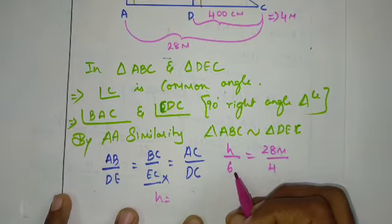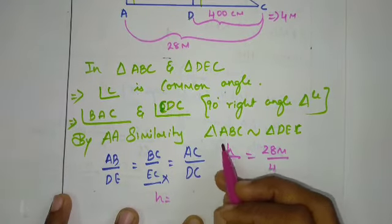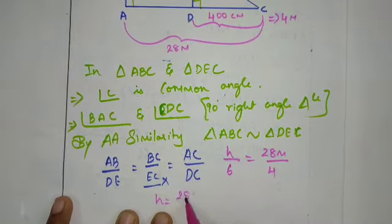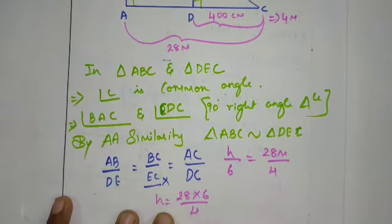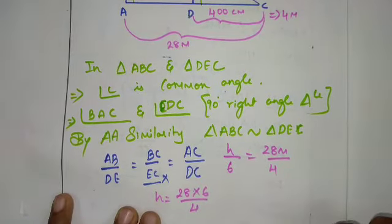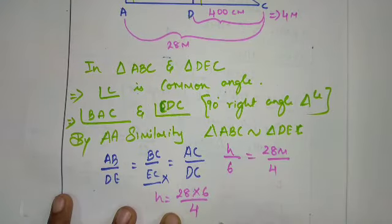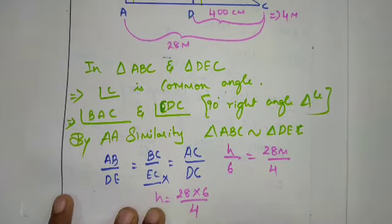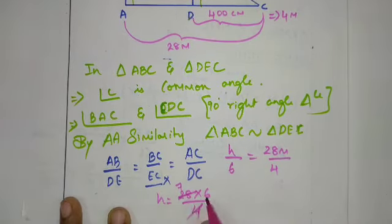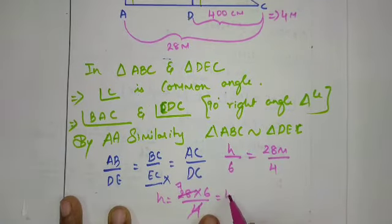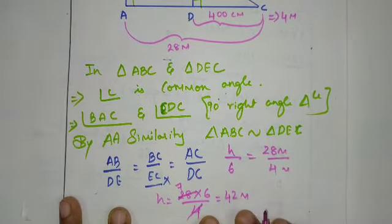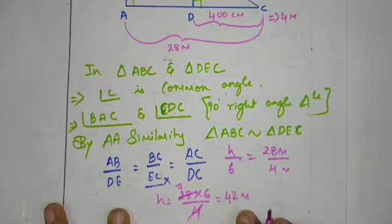28 into 6, divided by 4. Cancel and simplify. Finally, the answer is 42 meters.